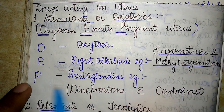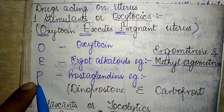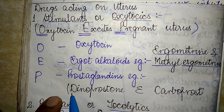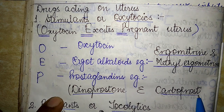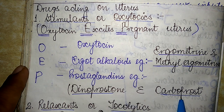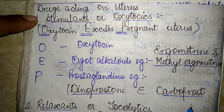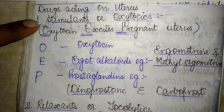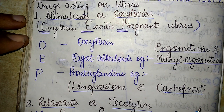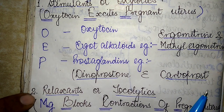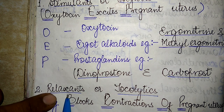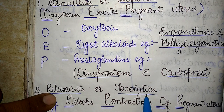The P of 'Pregnant' refers to the Prostaglandins. Two very famous examples in this category are Dinoprostone and Carboprost. That covers the stimulants or oxytocics classification. The next category is the relaxants or tocolytic drugs.